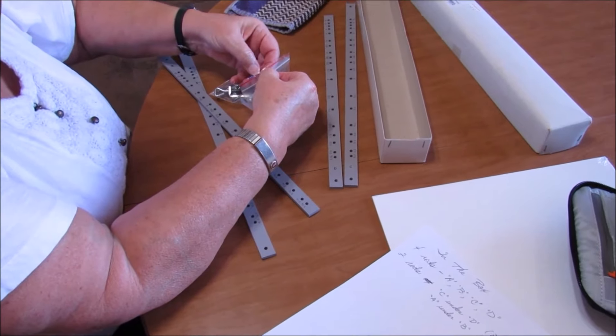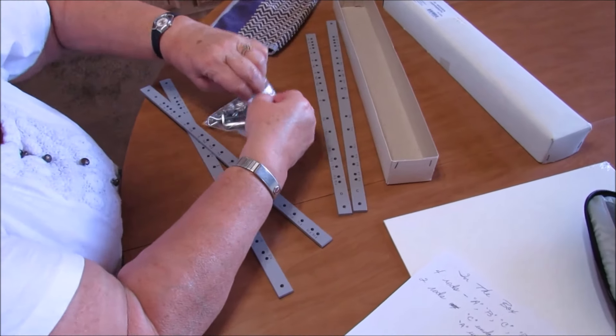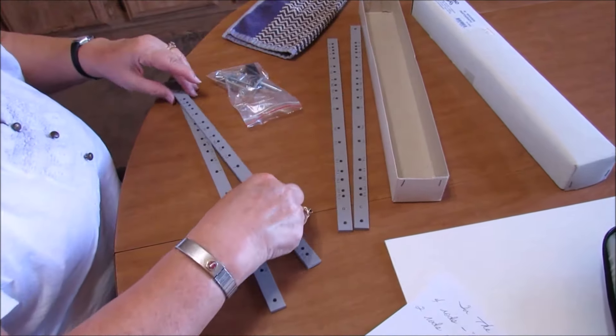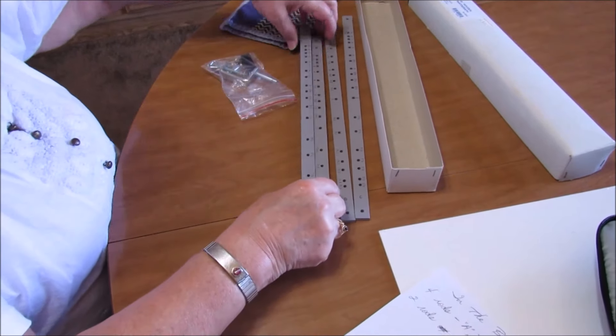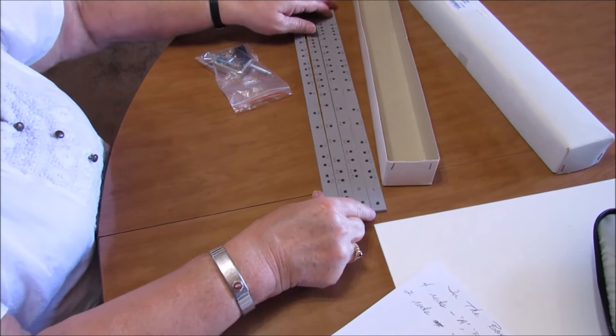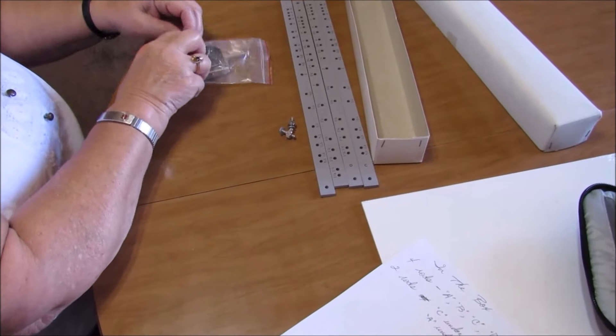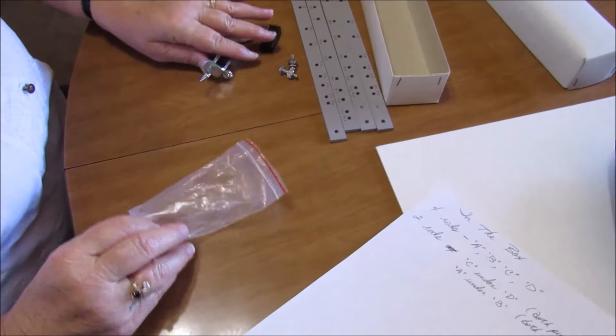Your pantograph comes in a box and in this case it's unassembled. It's got four slats and a bag of parts.